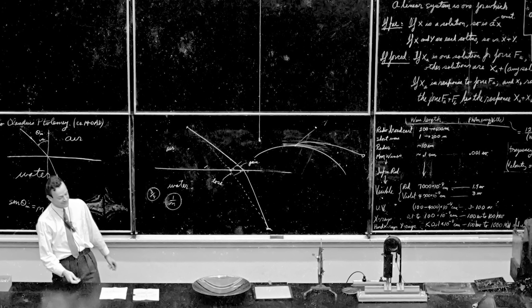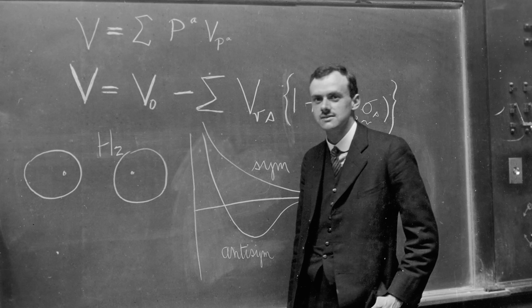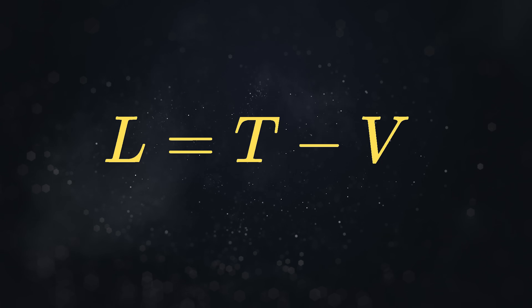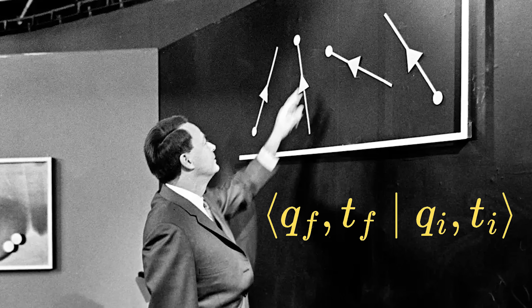Path integrals weren't invented by Feynman out of thin air to describe particles taking scenic routes. Paul Dirac introduced the core idea in 1932. Dirac's goal was to understand the quantum role of the Lagrangian, which felt sidelined by the Hamiltonian-focused formulations of Schrödinger and Heisenberg. Dirac figured out how to express the transition amplitude by dividing time into tiny intervals and inserting complete sets of states. Feynman, years later as a PhD student, turned Dirac's formal insight into the powerful computational recipe — the path integral — that we know. But notice the motivation: it was about mathematical representation and calculation, not primarily painting a literal picture of particle trajectories. Feynman himself, in his 1948 review, stated that his path integral couldn't, at least at the time, calculate anything that standard methods couldn't.